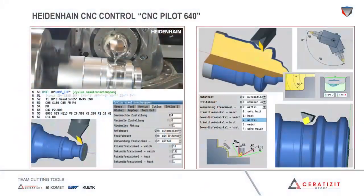On screen you see dialog windows and simulations in the typical Heidenhain style. In these dialogs, next to feed and cutting speed, you define the tool path with parameters. Finally, you can check the program using the included simulation.